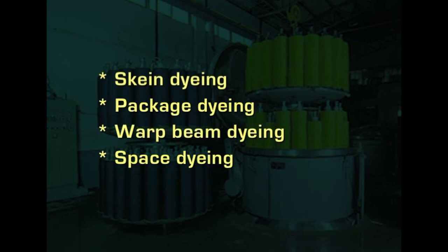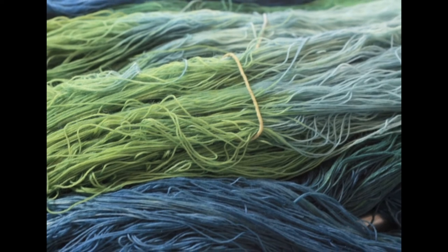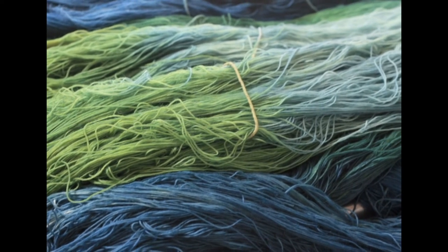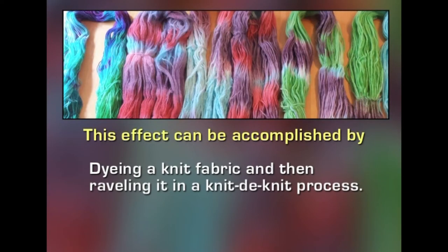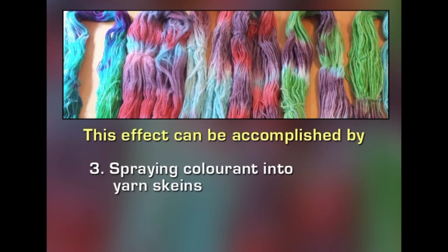Another method is space dyeing, where variation in color is created on plain yarn. Color is spotted here and there over the yarn so that once it is made into a fabric, different varieties of colors are visible. This can be accomplished by spraying color onto yarns at different intervals, or by dyeing a knitted fabric, raveling it, and re-knitting it, creating mottled or variegated coloration effects. Another technique is yarn package impregnation where needles spray different colors onto the yarn at different intervals. Space-dyed yarn is mostly used in the carpet industry because it disguises soil, making it less visible.